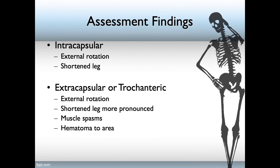Assessment findings differ between hip fracture types. For intercapsular fractures, you'll see external rotation and a shortened leg. For extracapsular or trochanteric fractures, look for external rotation where the shortened leg is more pronounced. The patient will complain of muscle spasms and you should be able to see a hematoma.